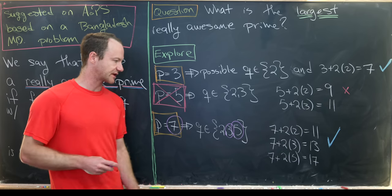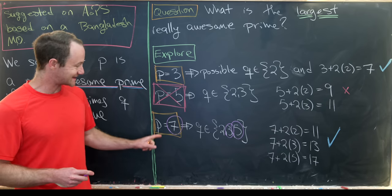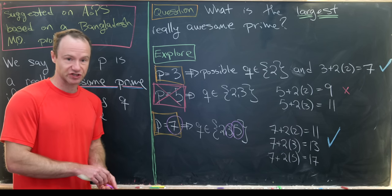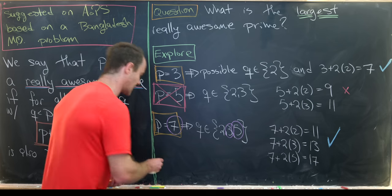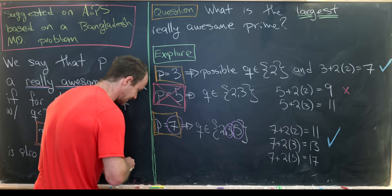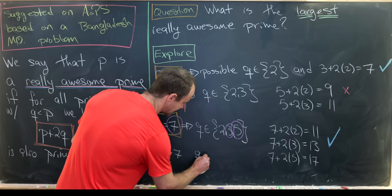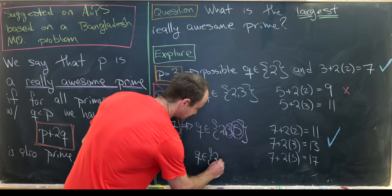And this is actually really important because that gives us some motivation that 7 may in fact be our largest really awesome prime. That's because if we have a prime which is larger than 7, then that means q comes from the set 2, 3, 5, 7, and so on.